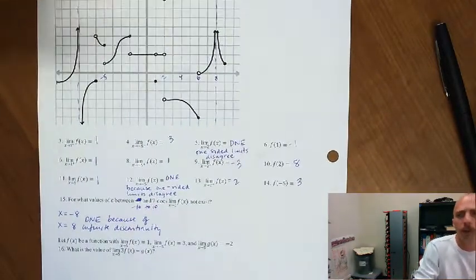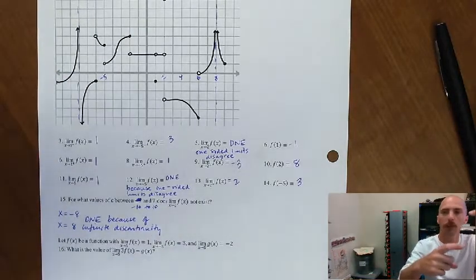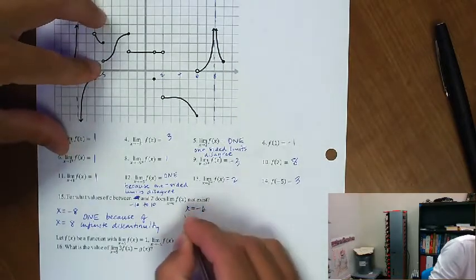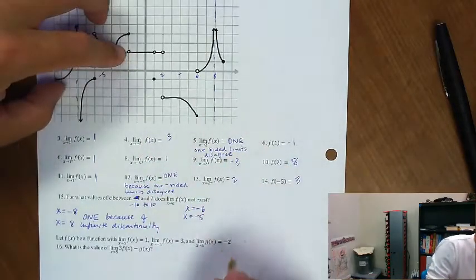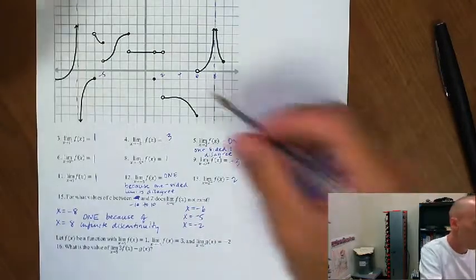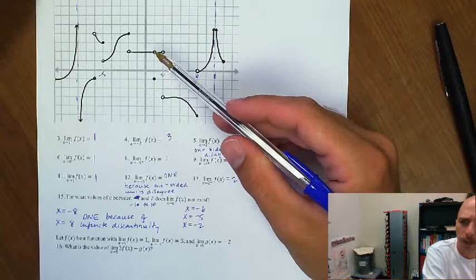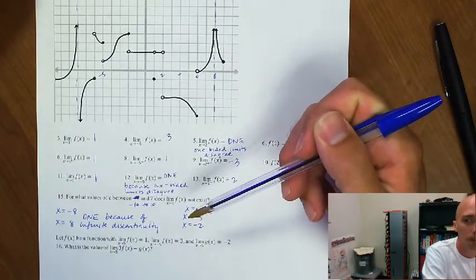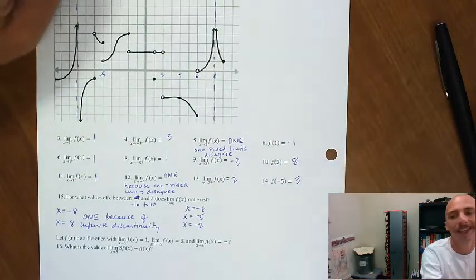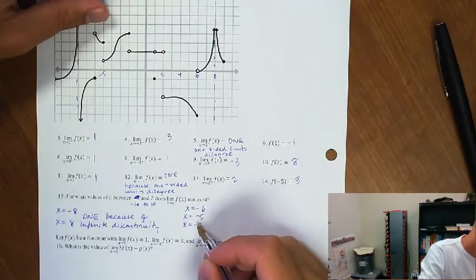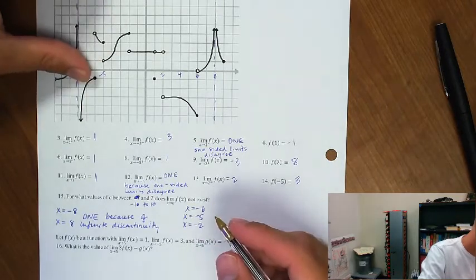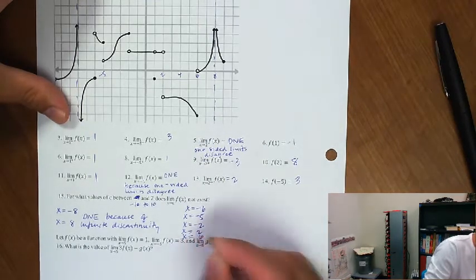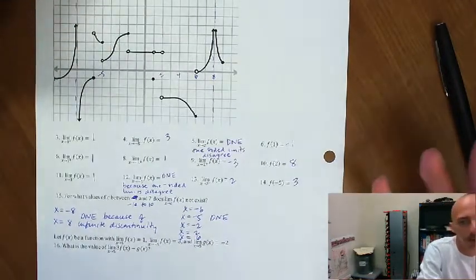There are probably some others where the limit fails to exist because of a non-removable discontinuity — like a jump discontinuity. So that's going to be quite a few: negative 6, negative 5, x equals negative 2. What about x equals 1? No — that limit exists and equals 1. We're asking not where the function is discontinuous, but where the limit fails to exist, and that's not exactly the same thing. So: negative 5, negative 2, positive 2, and what looks like 6 also.